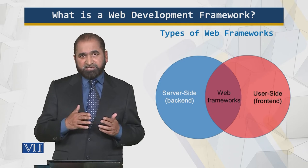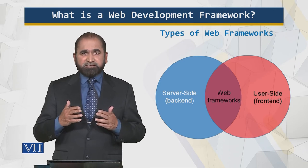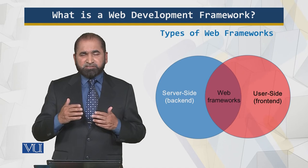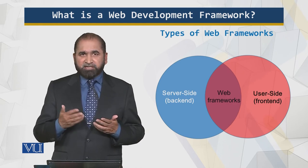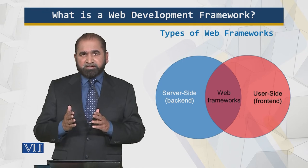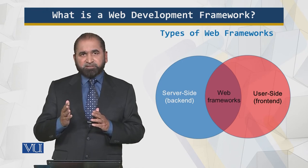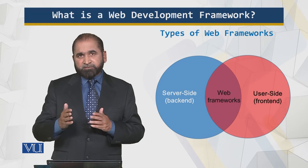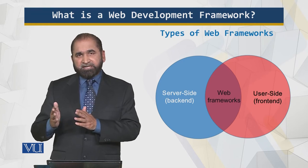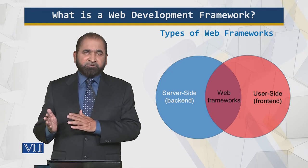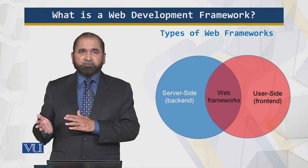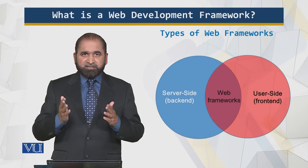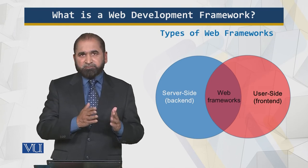For the front-end web development framework, things happen inside the browser and there is no business logic on the client side. In the three-tier architecture we've been discussing, the middle tier and part of the database tier are handled by the server-side framework, while the user interface is handled by the client-side framework.